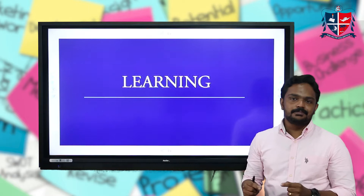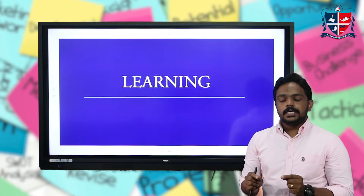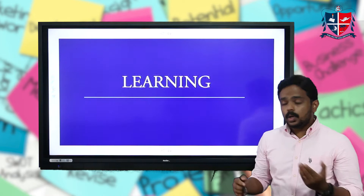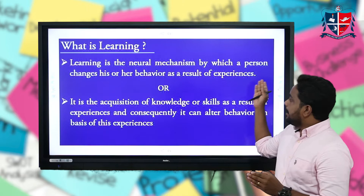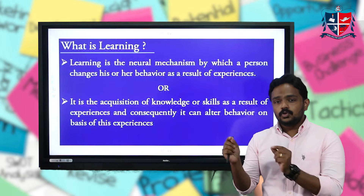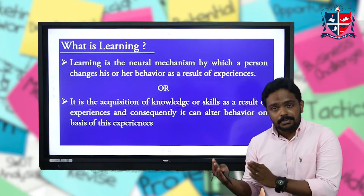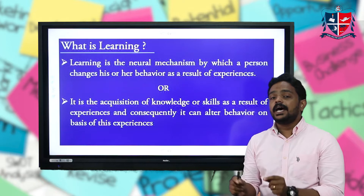These are all different kinds of aspects involved in our human day-to-day life, and it is also applicable to the animal kingdom. Learning is a very important part of how animals live and how they respond to the environment. Learning is a neural mechanism by which a person changes his or her behavior as a result of experiences — it is an acquisition of knowledge or skills through experience.